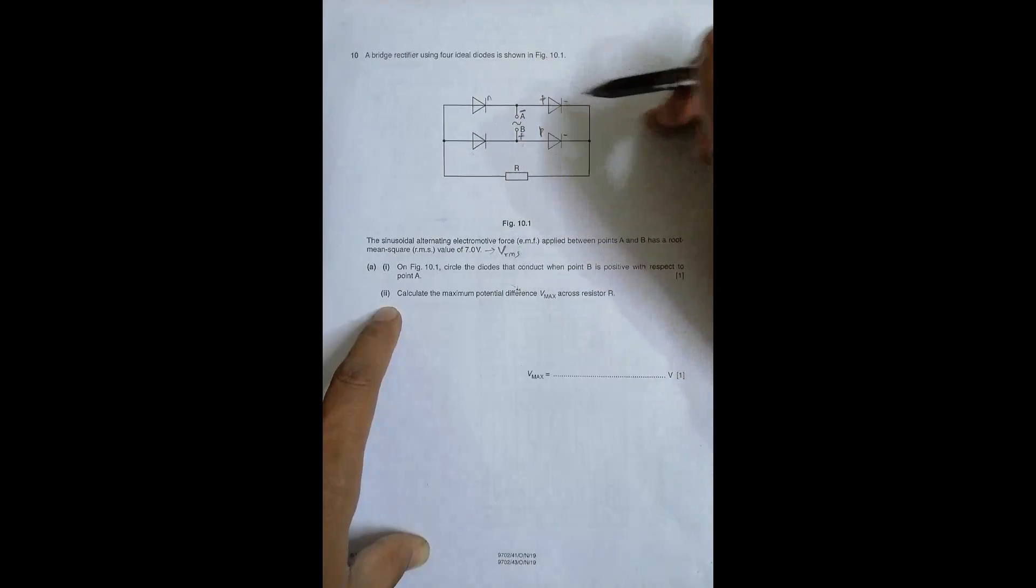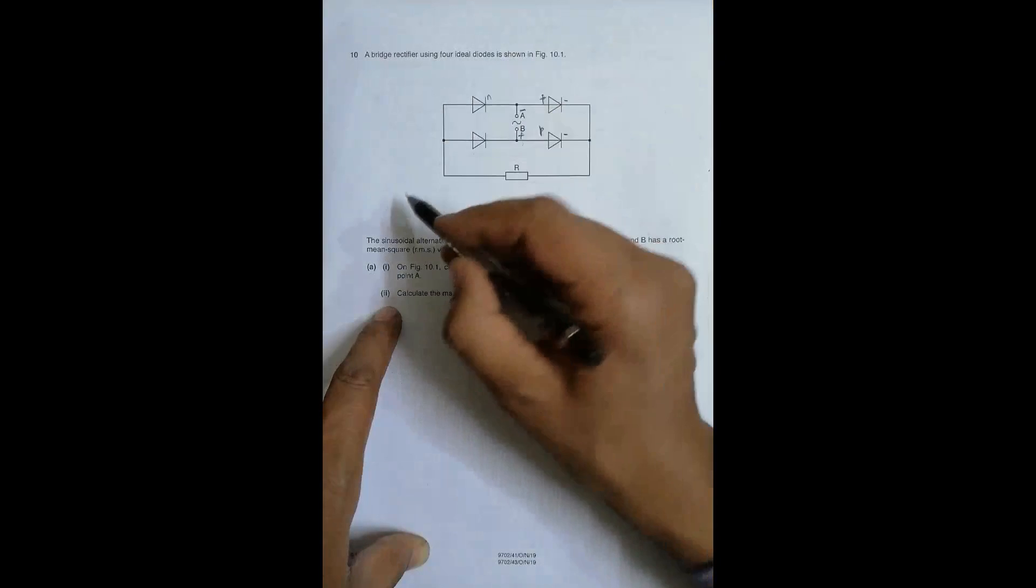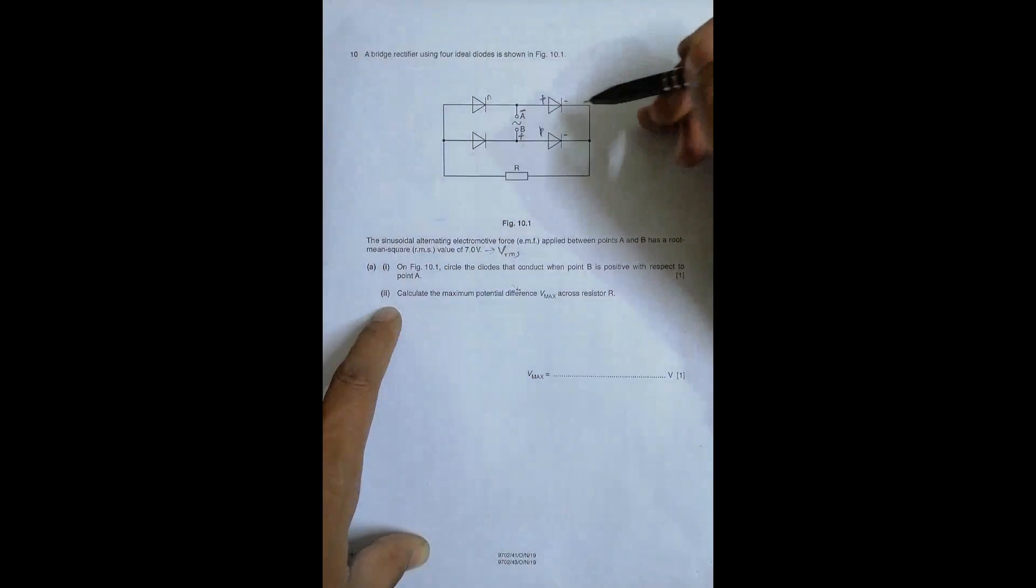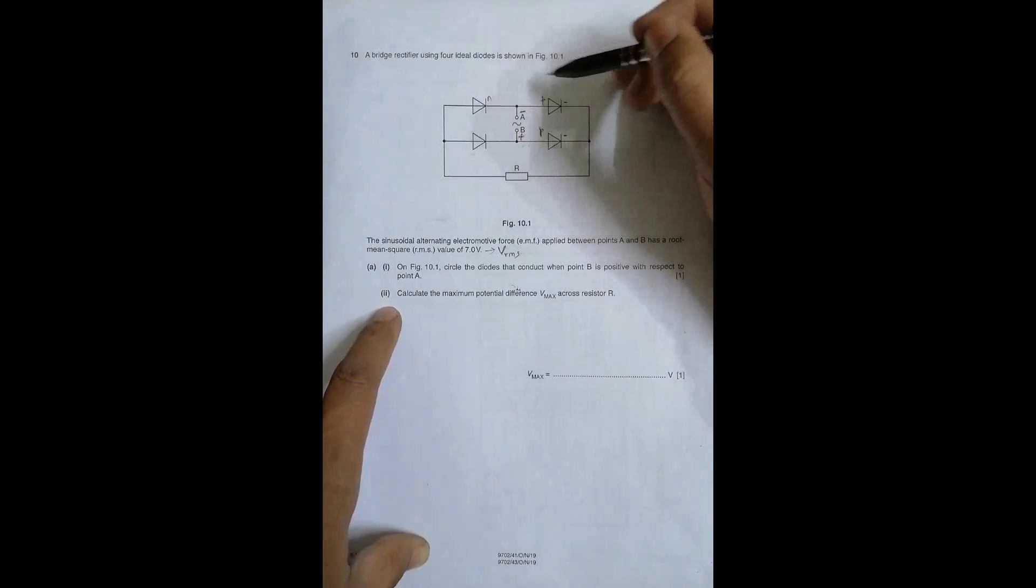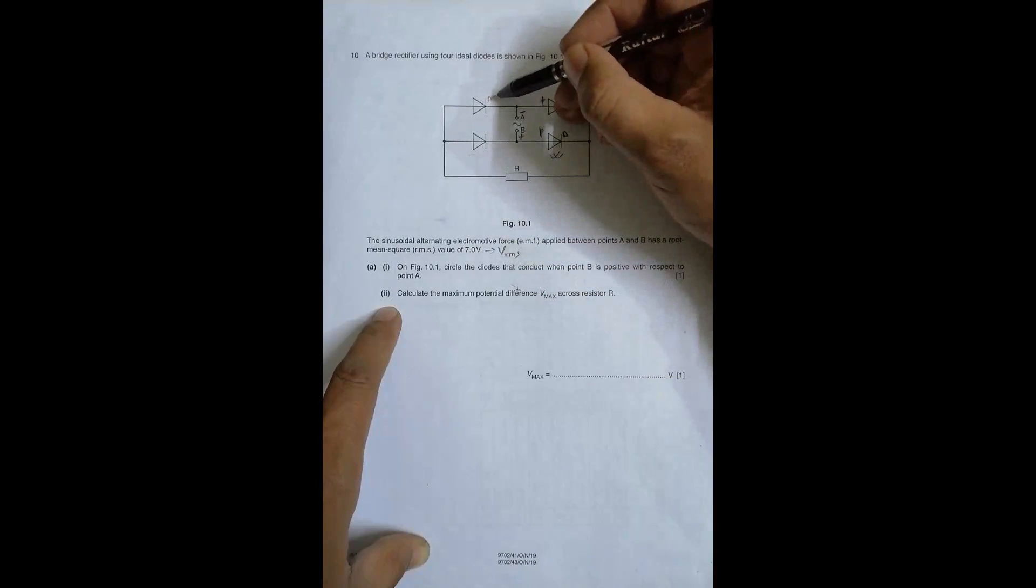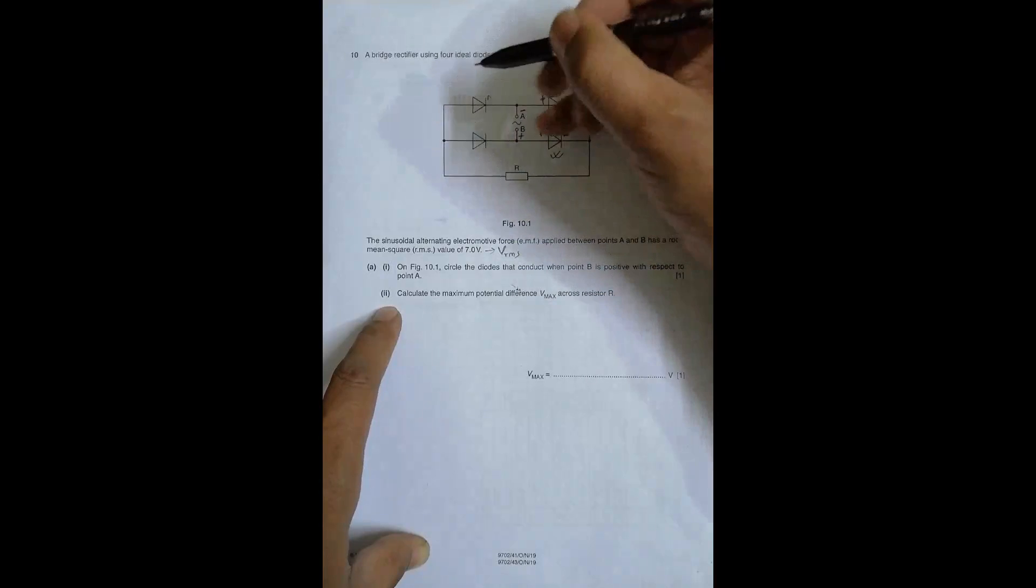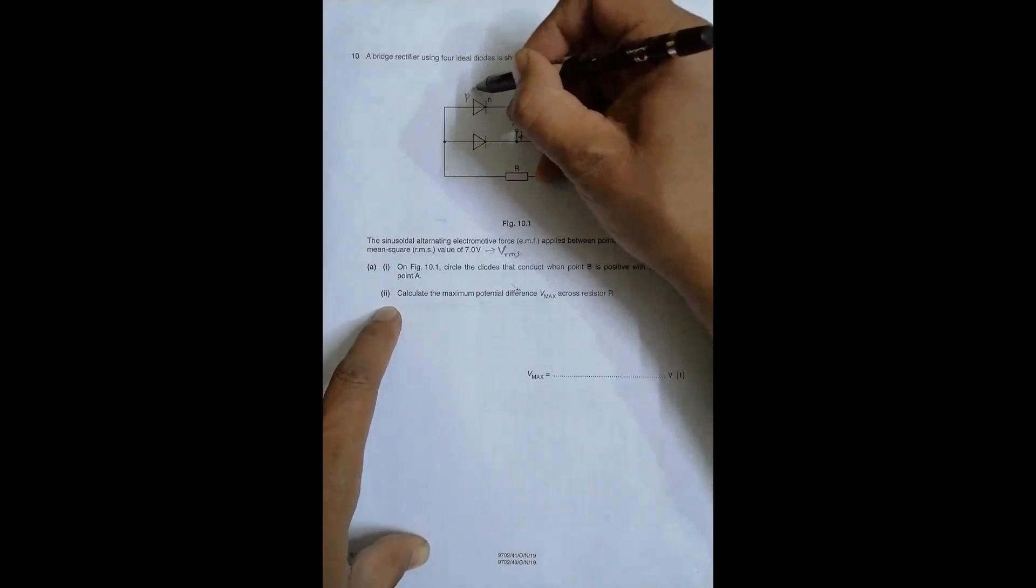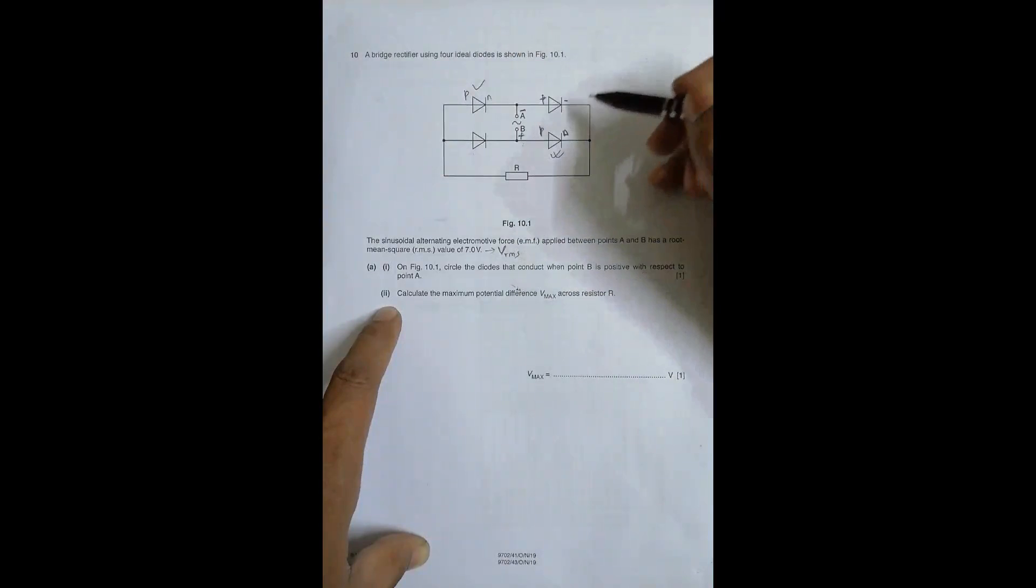And then this 0 again is negative. So what happens here is this diode P and negative here, negative here, negative here, so it should conduct. This should conduct. And also we have got negative here. This is at 0. So this 0 should be positive compared to this, so this will conduct.